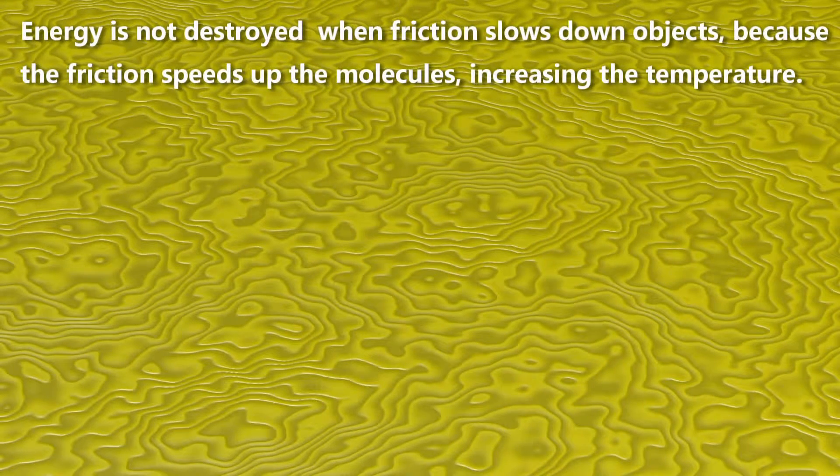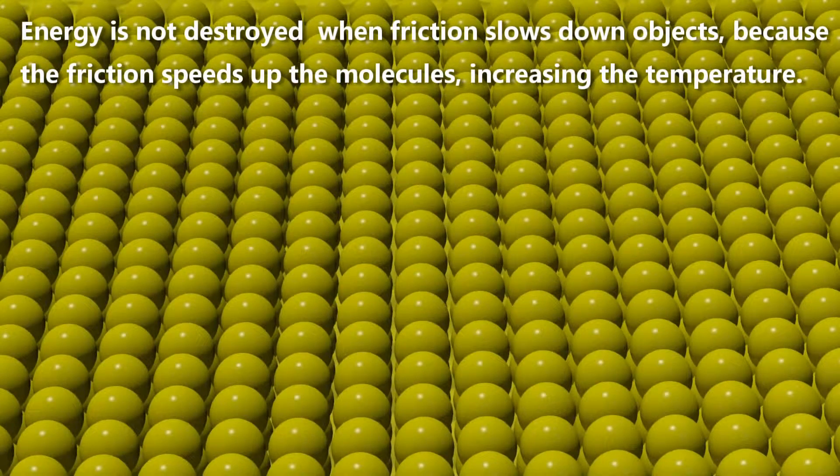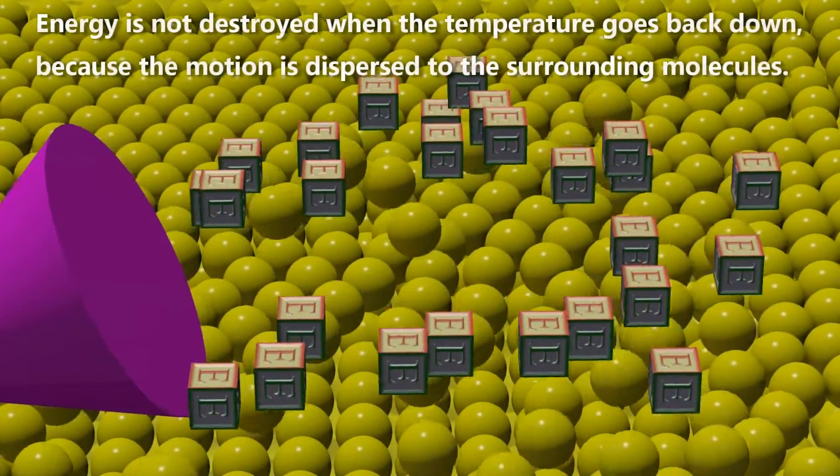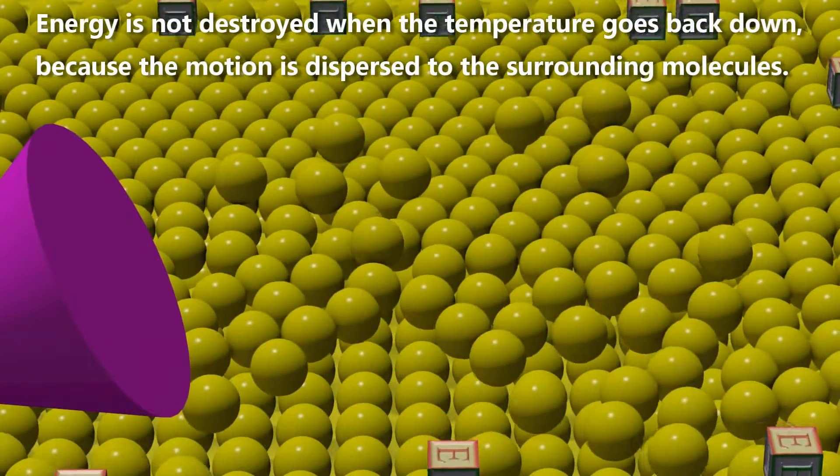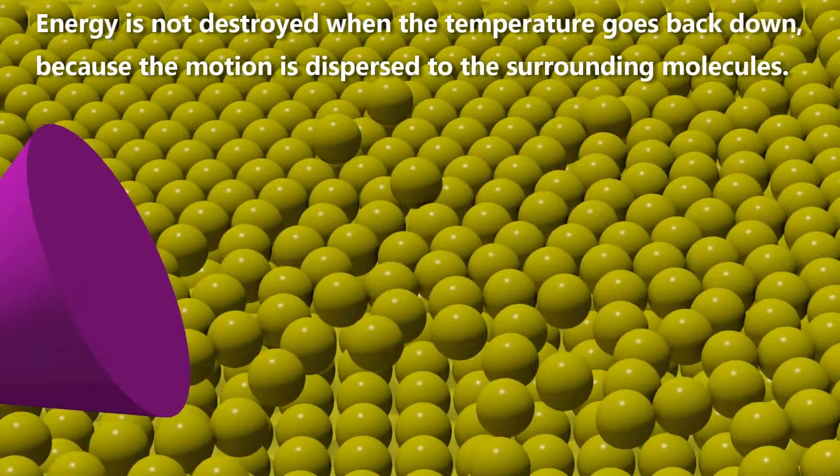Energy is not destroyed when friction slows down objects, because the friction speeds up the molecules, increasing the temperature. Energy is not destroyed when the temperature goes back down, because the motion is dispersed to the surrounding molecules.